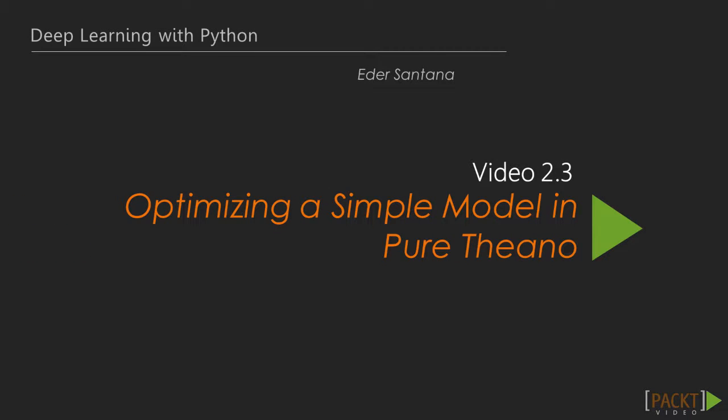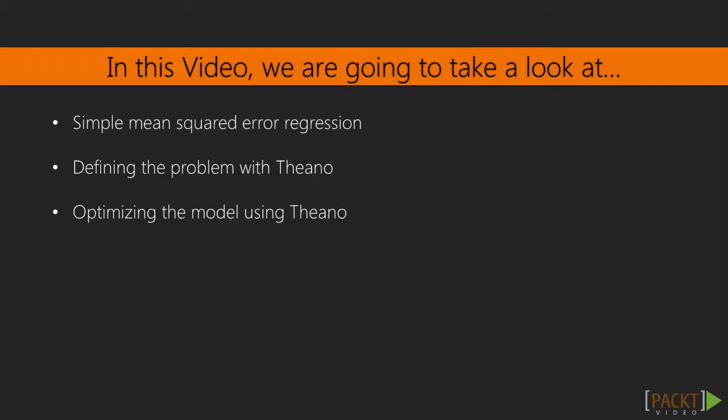Welcome to video 3 of section 2: Optimizing a simple model in pure Theano. In the previous video, we talked about what Theano is — a Python framework for evaluating mathematical expressions that is really popular for deep learning. In this video, we will talk about a simple single-layer mean-square error regression. We will define the optimization problem in Theano and optimize all the parameters efficiently without needing to move parameters back and forth to the GPU, or if not using one, to avoid moving data unnecessarily within CPU memory.